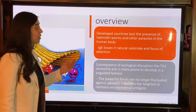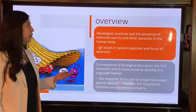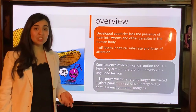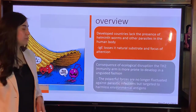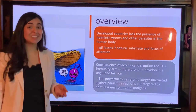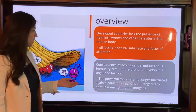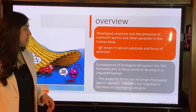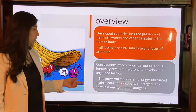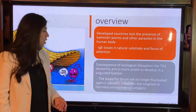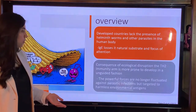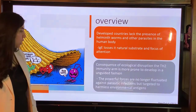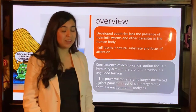Because developed countries lack the presence of helminth worms and other parasites in the human body, IgE loses its natural substrate and focuses its attention elsewhere. Because of this disruption, the T helper 2 immunity arm is more prone to develop in an unguided fashion. The powerful immune forces are no longer directed against parasitic infections but are targeted to harmless environmental antigens.